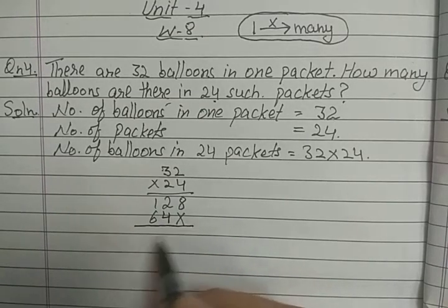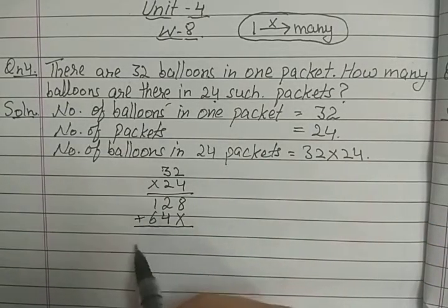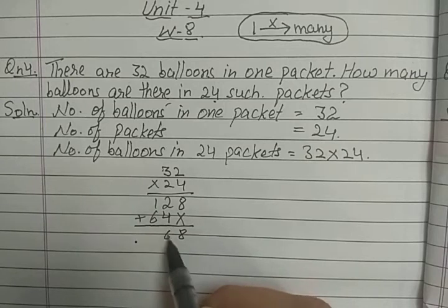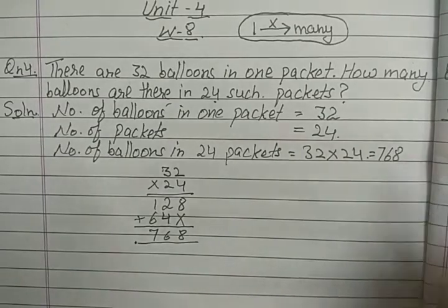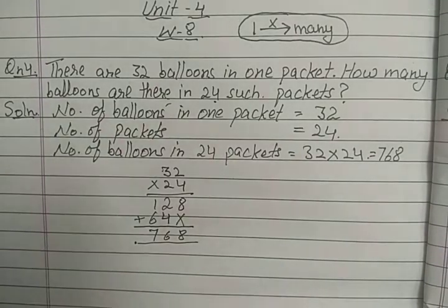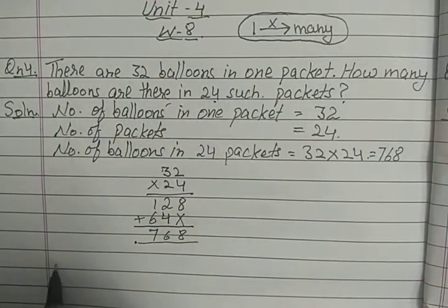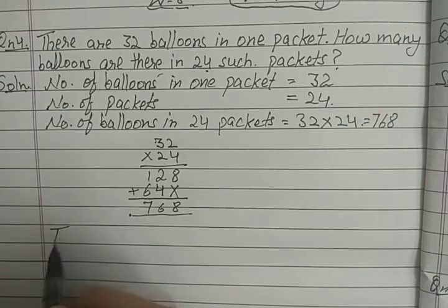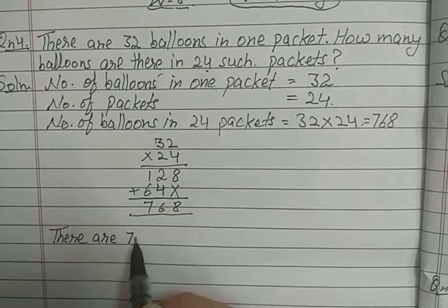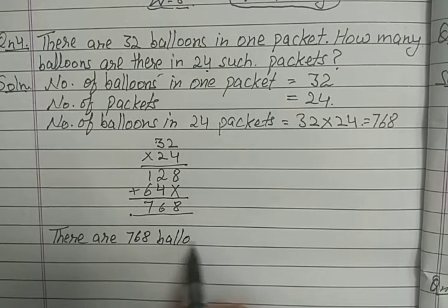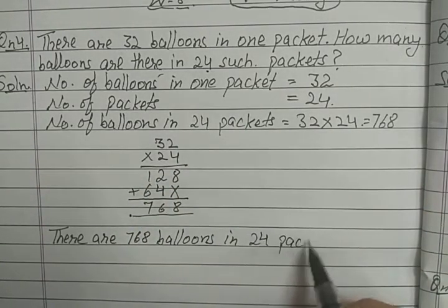Then multiply by tens place: two twos are four, two threes are six. In the third step we add these two products: eight, four plus two is six, six plus one is seven — seven hundred and sixty-eight. So the answer is: there are 768 balloons in 24 packets.